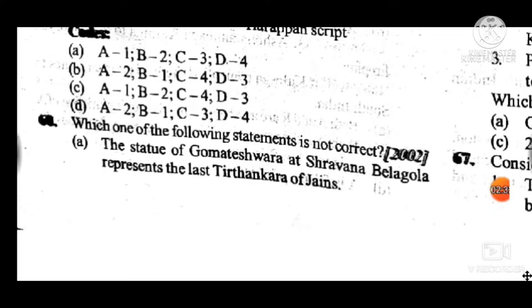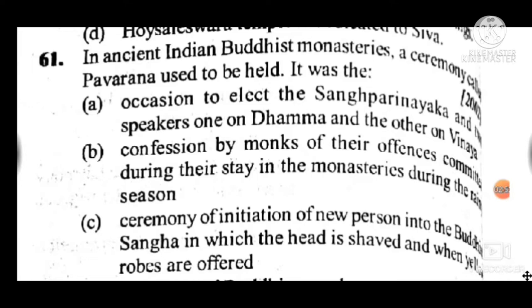Question 60: Which one of the following statements is not correct? Answer is — the statue of Gommateshvara at Shravanabelagola represents the last Tirthankara of the Jains. This is an incorrect statement.